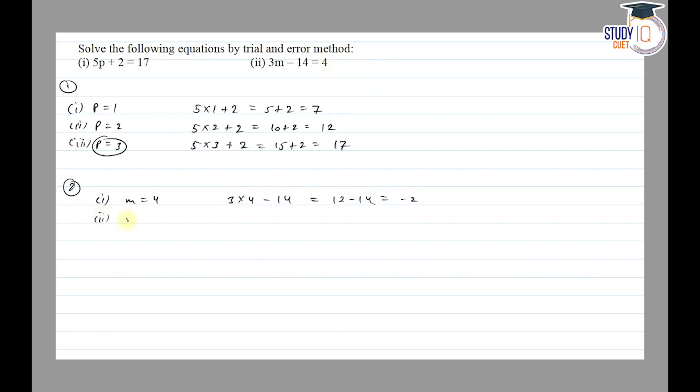Then next value, put m equals 5. So 3 into 5 minus 14, 15 minus 14 is equal to 1. Now 1 is not equal to 4, so m equals 5 is not the answer.